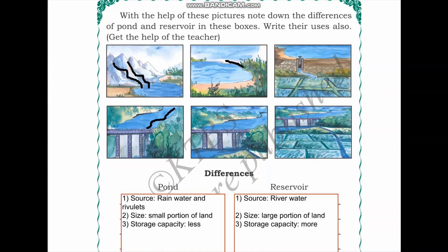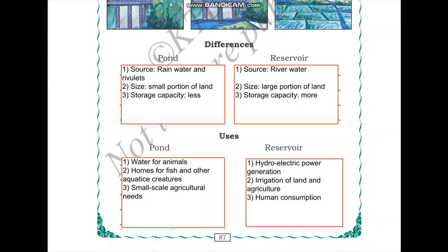The size of the pond is small, while the size of the reservoir is very large. The next difference is water capacity: the amount of water stored in a pond is smaller, whereas the amount stored in a reservoir is much higher. So the storage capacity of a pond is less, and the storage capacity of a reservoir is more.